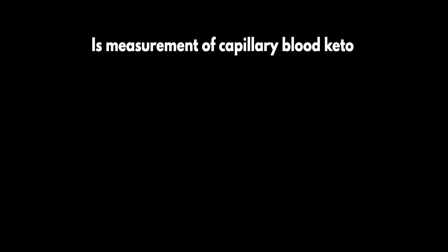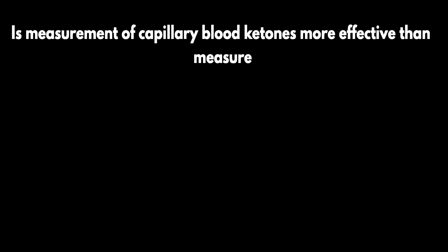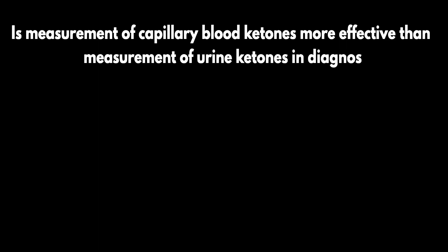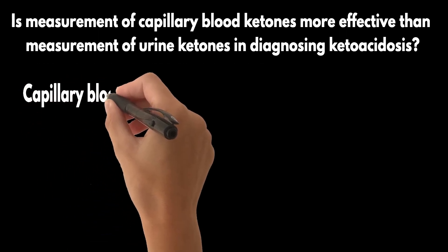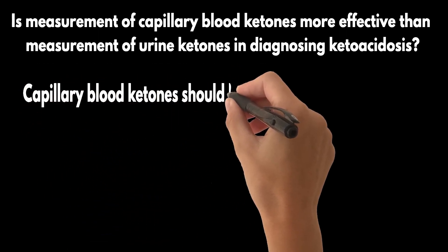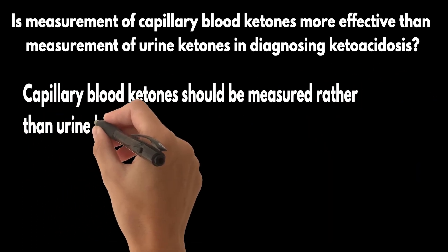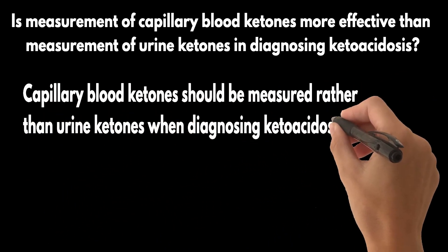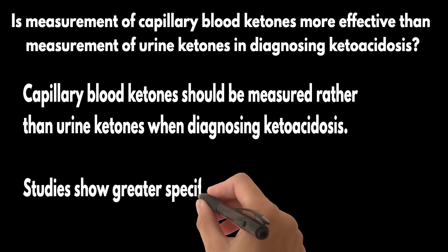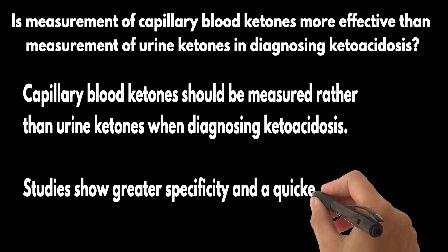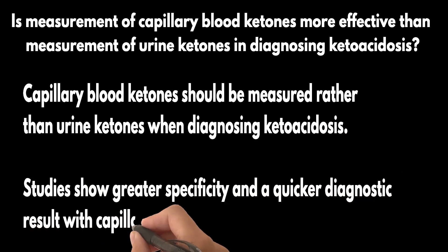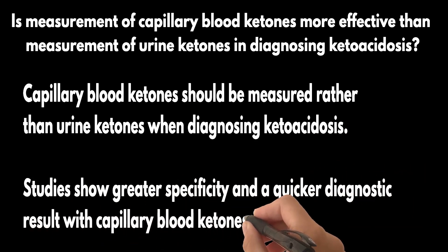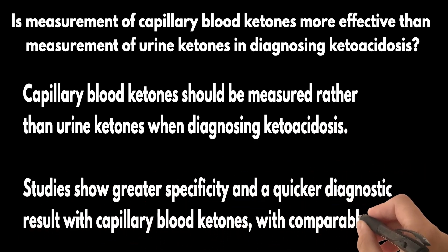Is measurement of capillary blood ketones more effective than measurement of urine ketones in diagnosing ketoacidosis? Capillary blood ketones should be measured rather than urine ketones when diagnosing ketoacidosis. Studies show greater specificity and a quicker diagnostic result with capillary blood ketones, with comparable sensitivity.